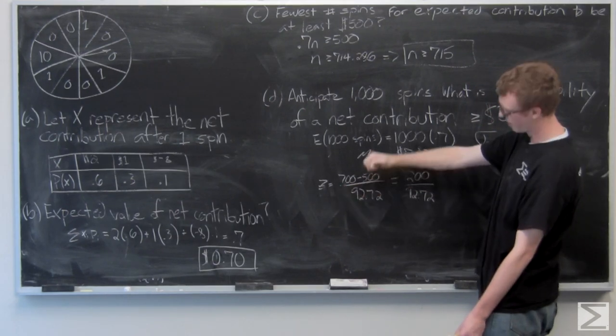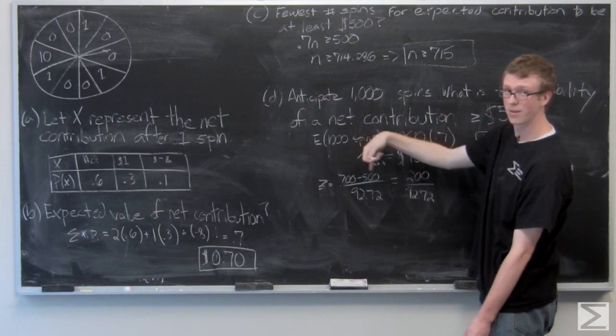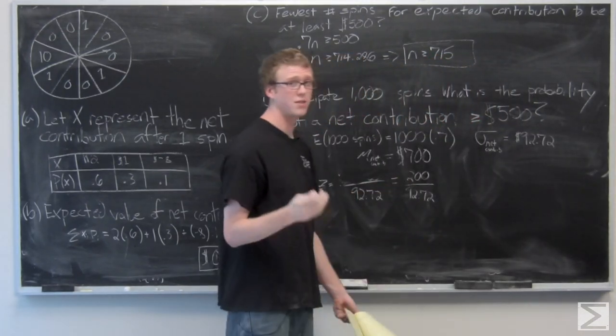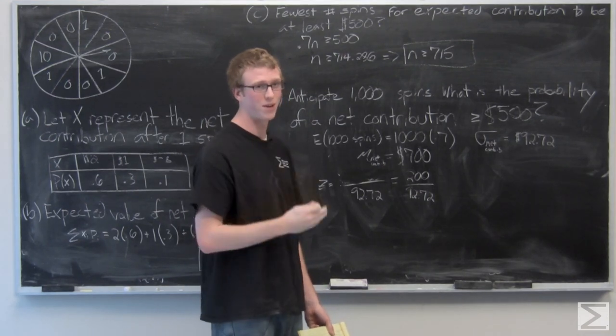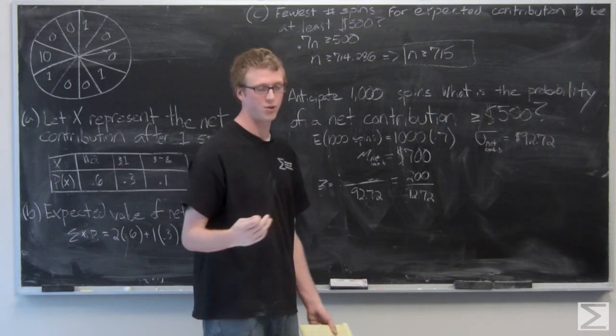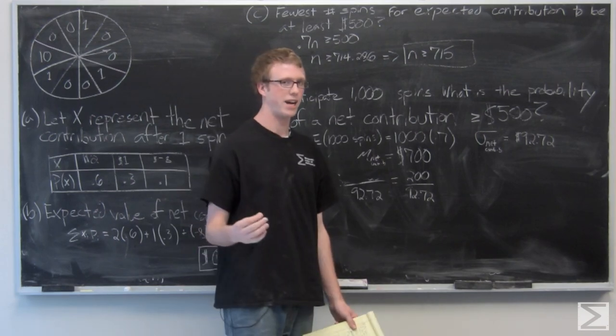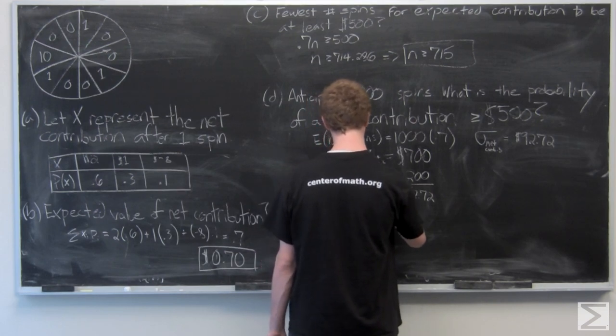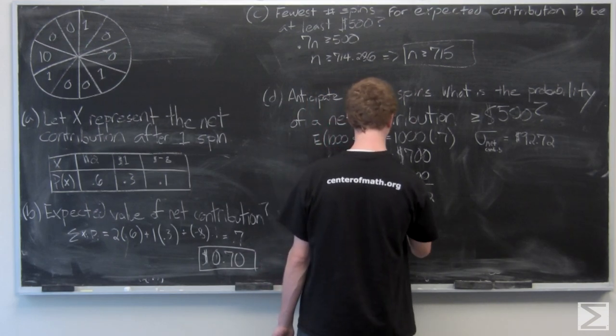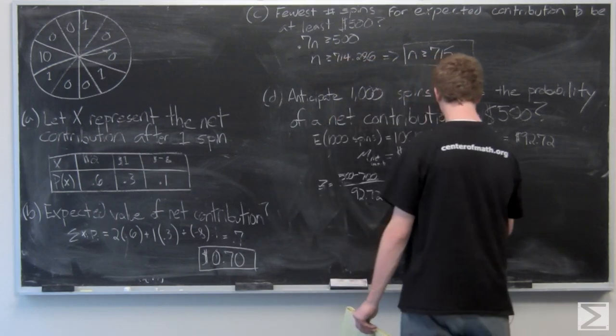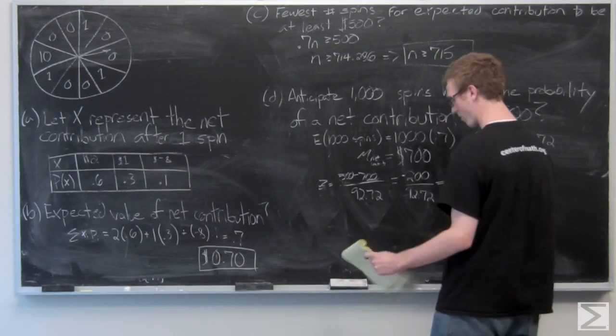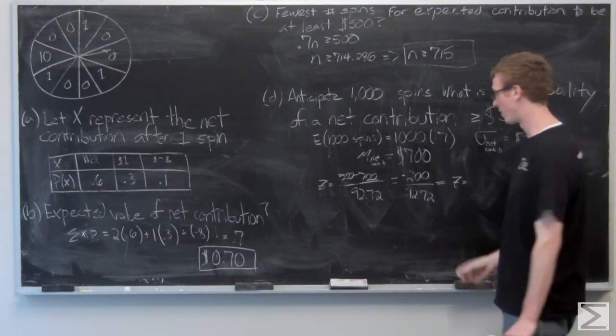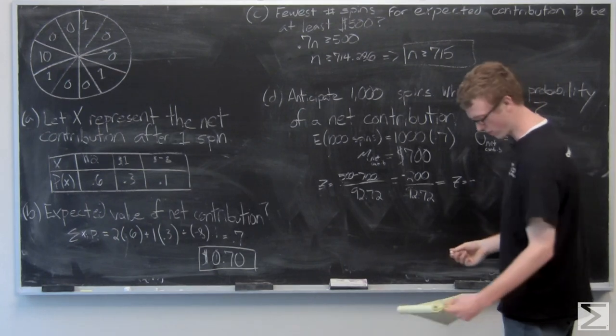I actually ordered this wrong originally—this is supposed to be 500 minus 700. It wouldn't affect your probability in the end as long as you correctly interpret the z-score that you're figuring out, but this is going to be a direct way to figure out what we have going on. So we have z equals negative 200 over 92.72 or negative 2.155.